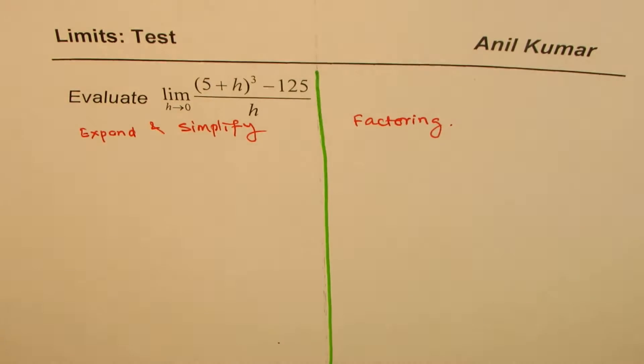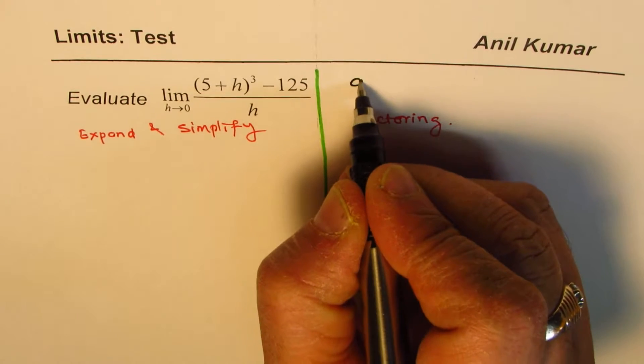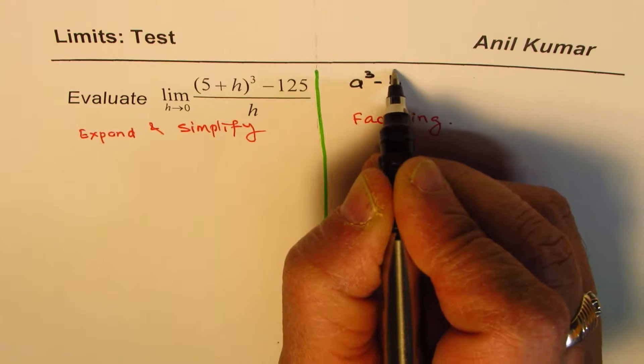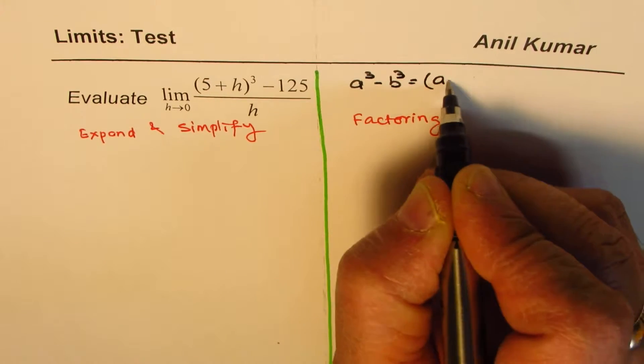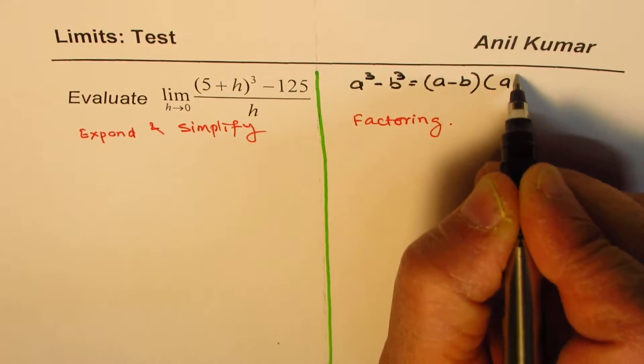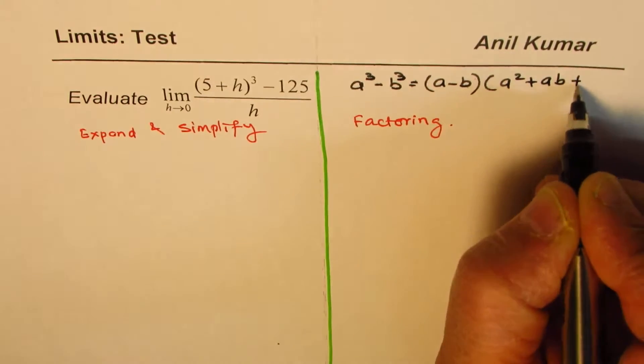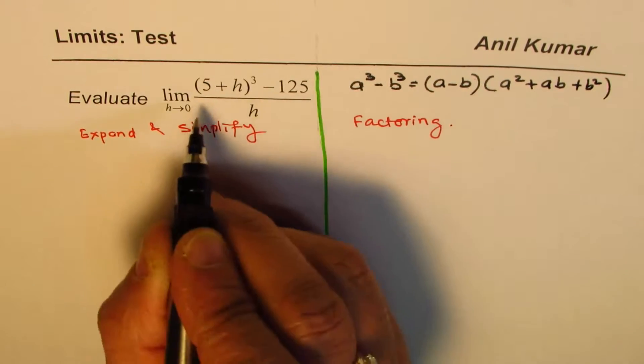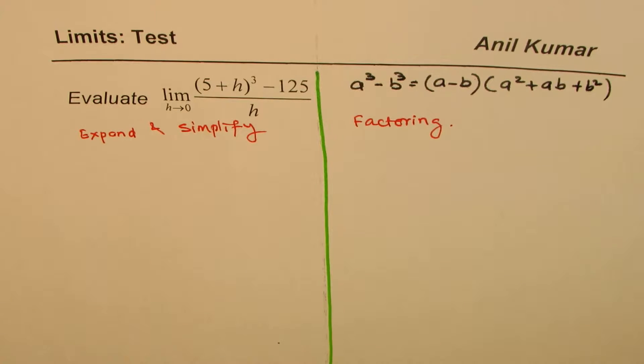For factoring, I hope you remember the formula a cube minus b cube. Let me write down the formula here. a cube minus b cube is a minus b times a square plus ab plus b square. So, using this, we can factor and then solve this question.